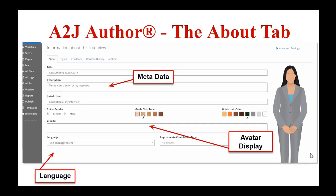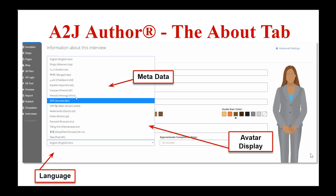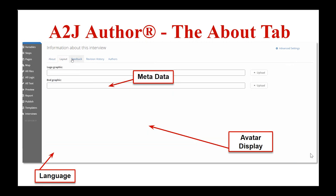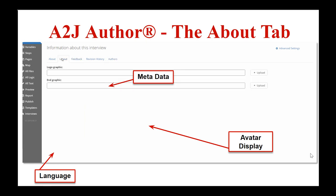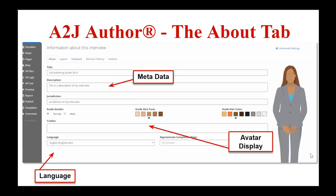The first tab is the About tab. It contains the general information and metadata for your interview, including things like the title, a description, the jurisdiction, who the author is, what version you're using, what language is controlling the interview, and a history of revisions. You can add graphics including branding logos and ending graphics. The branding logo appears in the bottom right-hand corner of your interview for your end user to see — it's 120 by 120 pixels maximum and should be a JPEG, PNG, or GIF file. The ending graphic would replace the courthouse if you wanted to — that should be 900 by 250 pixels, a PNG or SVG file, and make sure to use alpha transparency.